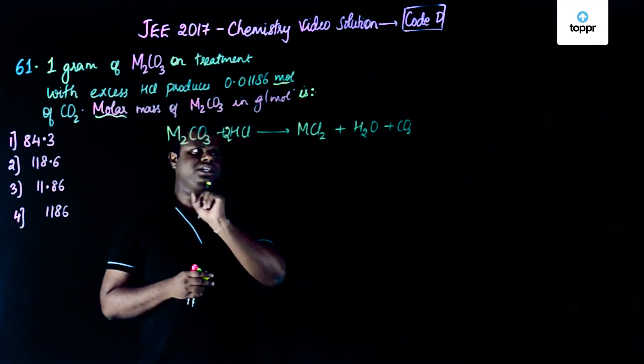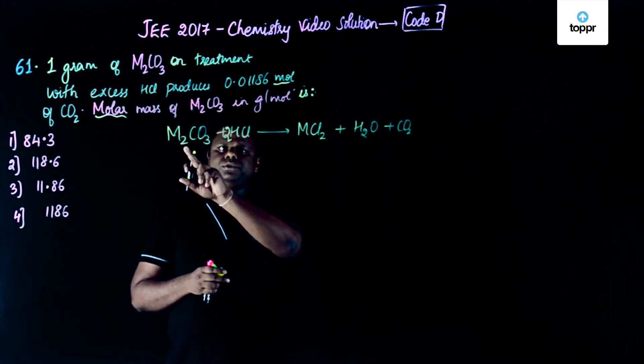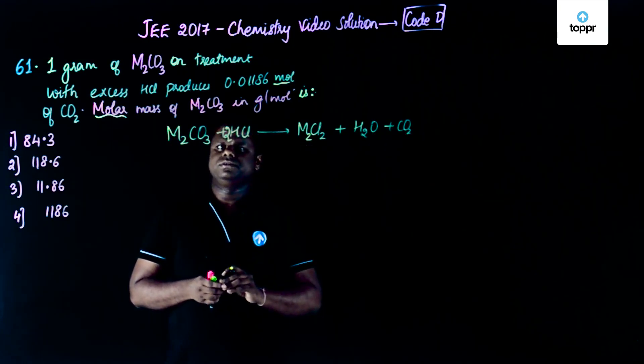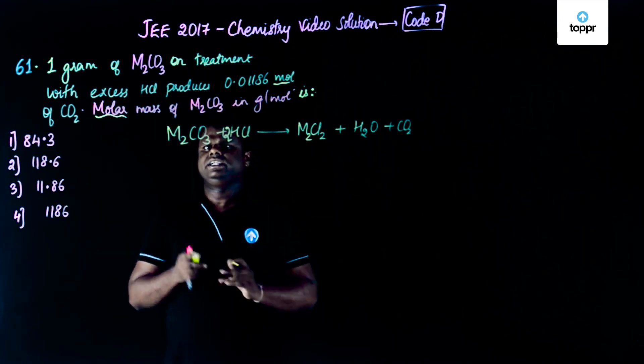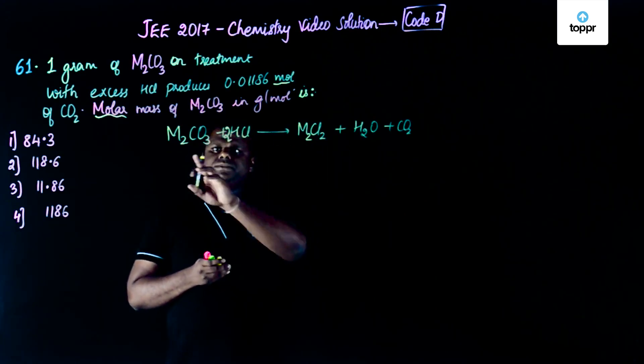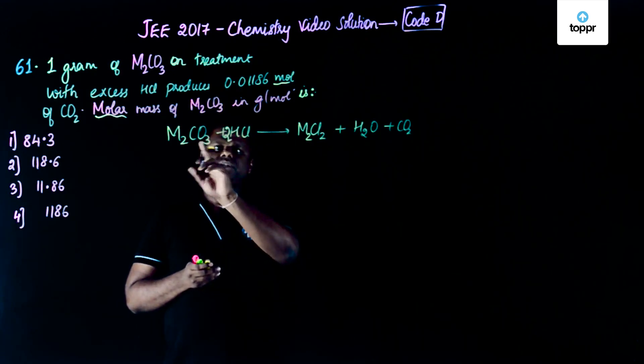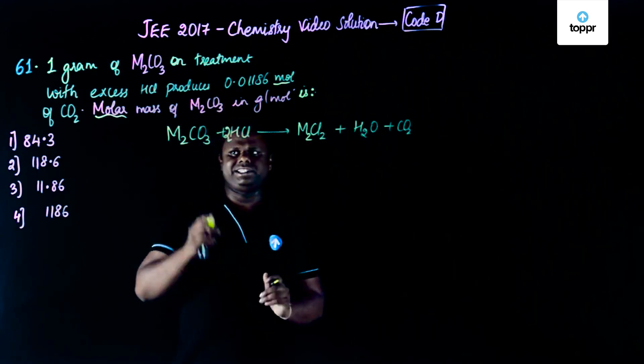Let's try to check whether it is balanced. So it's going to be M2 and 2HCl, so it could be something like M2Cl2. M2 here, M2 here, you have 2Cl here. H2CO3 is nothing but H2O plus CO2. Yes, it's correct.